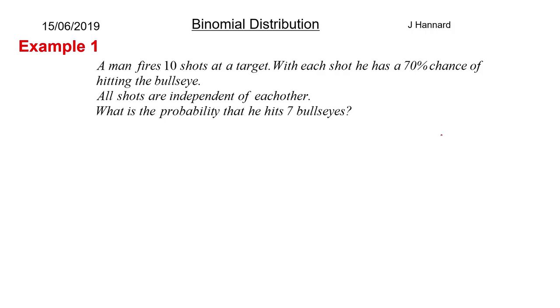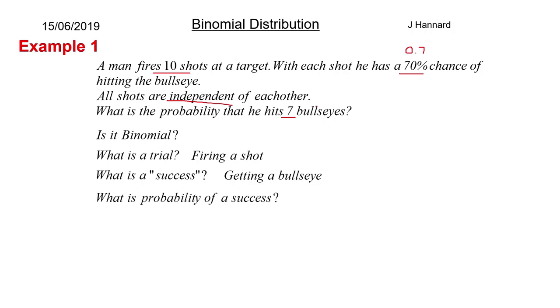So example one. A man fires ten shots at a target. With each shot he has a 70% chance of hitting the bullseye. All shots are independent of each other. What is the probability that he hits seven bullseyes? So what do we have here? We're looking for a number of trials N, so we've got ten trials. We've got probability of success 70%, but remember that is 0.7. All trials are independent so it is binomial. And we want R successes which is seven. So is it binomial? Yes. What is a trial? Firing a shot. What is a success? Getting a bullseye. What is the probability of a success? 0.7. Are the trials independent? Yes. Technically no but we're told it is in the question so we just take the examiner's word for it.